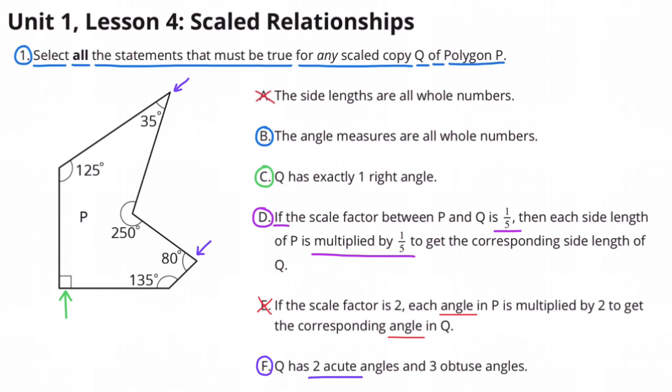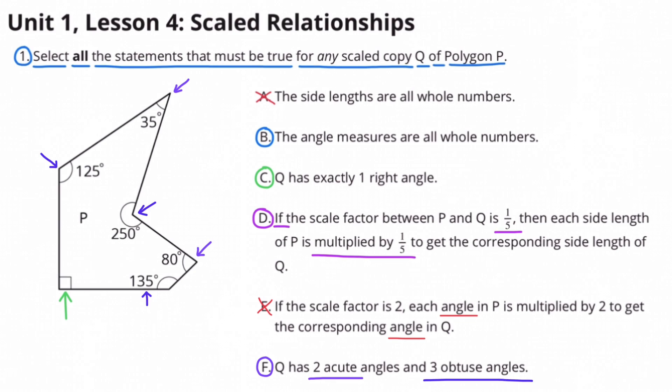And I selected F because Q has 2 acute angles and 3 obtuse angles. Acute angles are any angles that are smaller than 90 degrees and obtuse angles are any angles that are larger than 90 degrees.